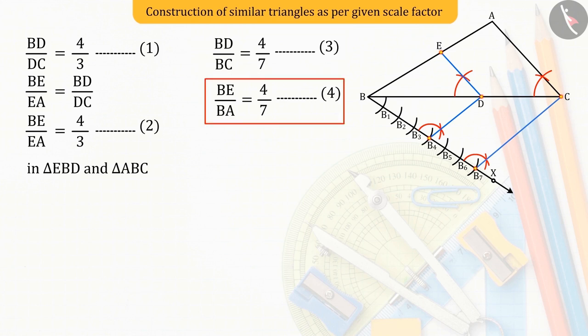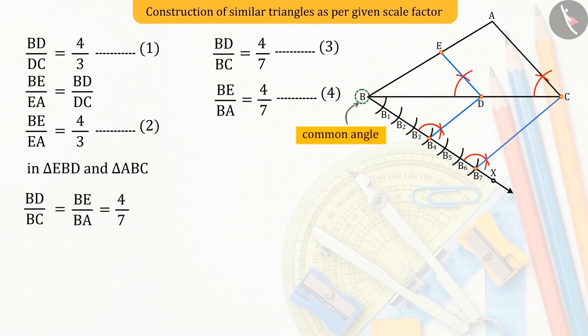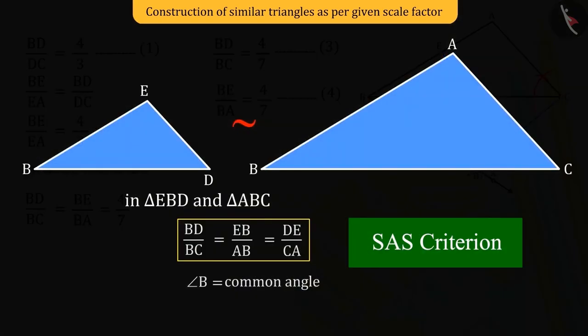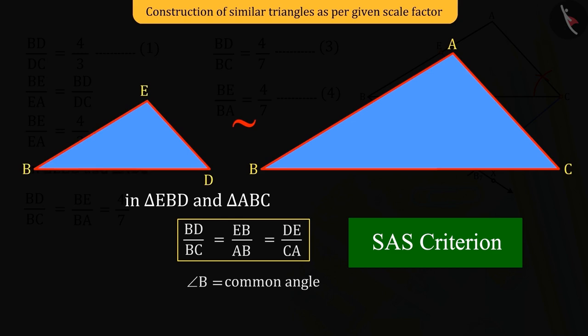So, from equation 3 and 4, we get BD upon BC equals BE upon BA, which is 4 upon 7. Also, angle B is the common angle. Hence, from SAS criteria of similarity of triangles, both the triangles ABC and EBD will be similar.